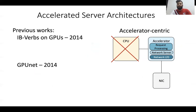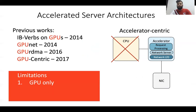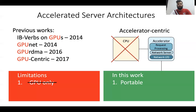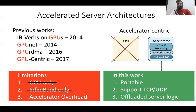A bunch of previous works have already tackled this problem and proposed this architecture, but all these works have three main limitations in common. First, they all focus on GPU only, which means if we want to use another type of accelerator we need to redo all the research and reimplement all the optimized libraries for each accelerator type, which is not practical. Second, all these works require InfiniBand connection between clients and server, which is not true for most cloud workloads where UDP and TCP are used. And last, moving the network server logic to the accelerator causes extra overhead on the accelerator, so in this work we want to offload the server logic from the accelerator.